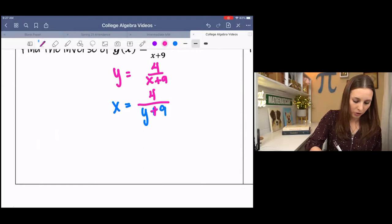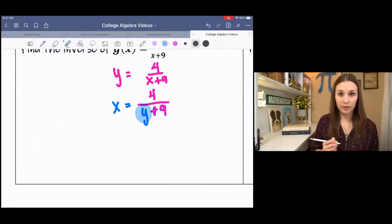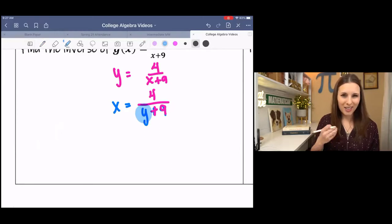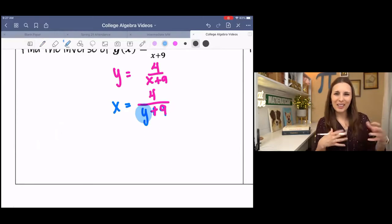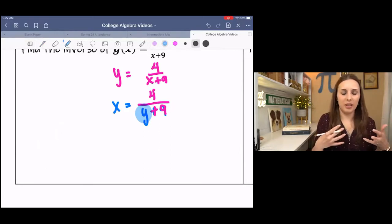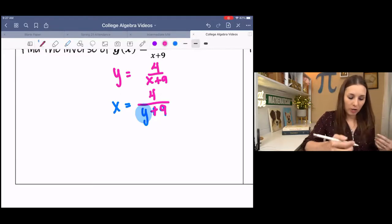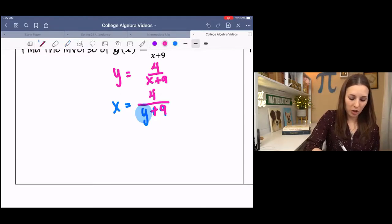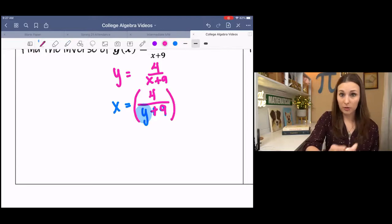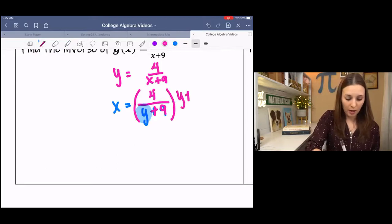So I'm going to change these. And then we are solving for our new Y. Now, it's in the denominator, so I need to get it out of there, basically. I need to free it. So to do that, I'm going to use the inverse operation. And I'm going to multiply, it's being divided, so I'm going to multiply by Y plus 9.